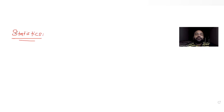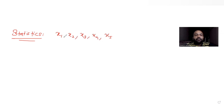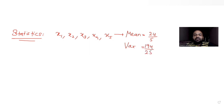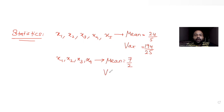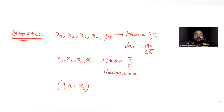The question tells us that let the mean and the variance of the 5 observations x1, x2, x3, x4, x5 — the mean for them is 24/5 and variance is equal to 194/20. Further we have been told that the mean and variance of first 4 observations x1 to x4, the mean is given as 7/2 and variance is given as a. We have been asked to find the value of 4 times a plus x5. So we need to find the fifth observation's value and the variance of the first 4 observations and multiply it with 4.